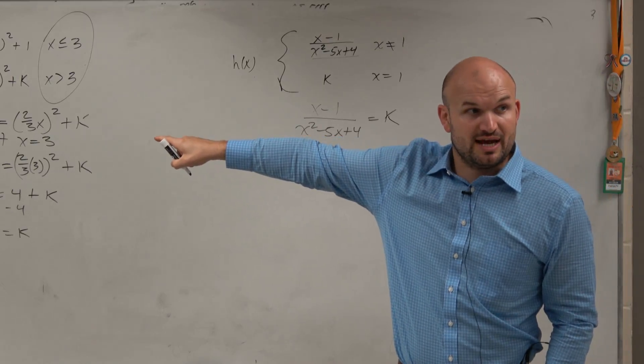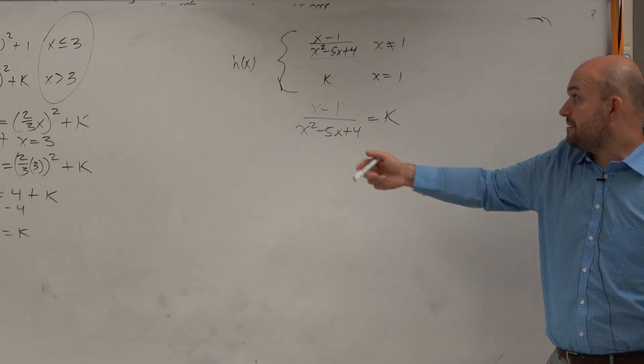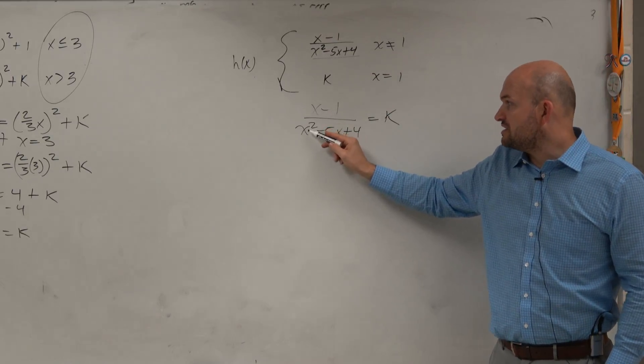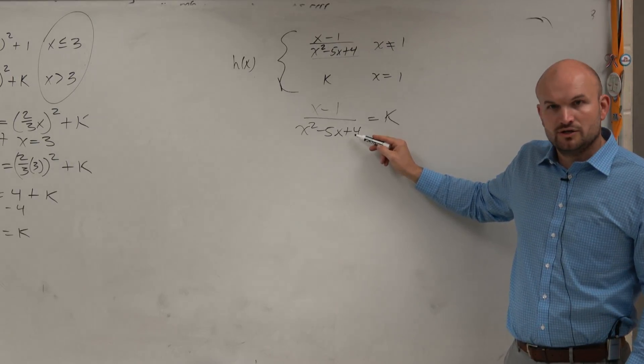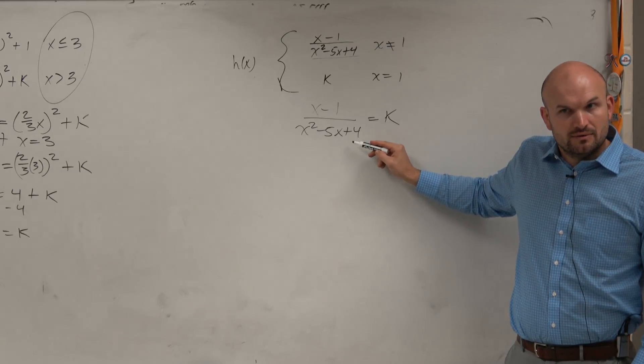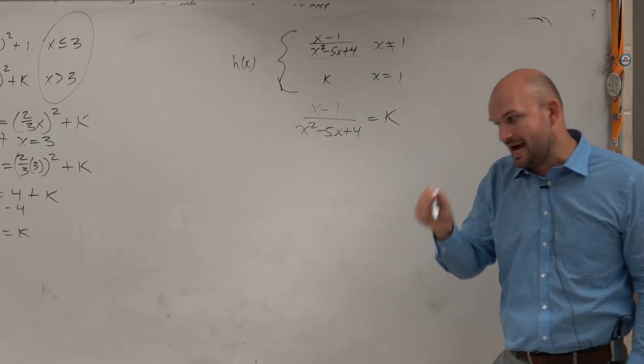Set them equal to each other, just like we did over there, right? And then plug it in. But the problem is plug 1 into here. 1 squared is 1. Negative 5 times 1 is negative 5 plus 4. That gets to 0. You can't have 0 in the denominator, right? So plugging in 1 doesn't work, at least right now.